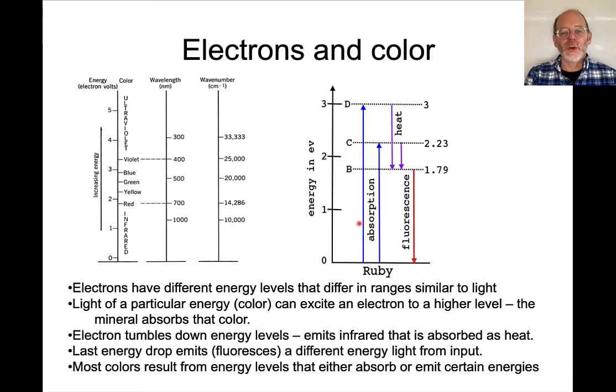It's absorbing in the higher energy part of the spectrum, and it is emitting in the lower energy part of the spectrum. So the whole idea of light in minerals that relates to electron energies is how can we absorb certain wavelengths of light, how can we emit certain wavelengths of light,